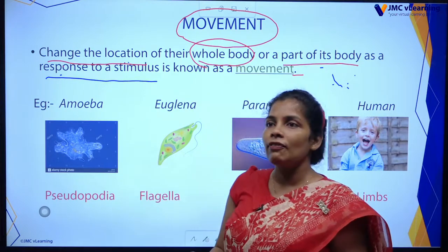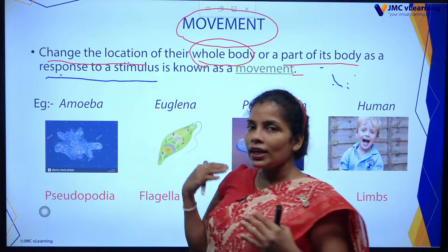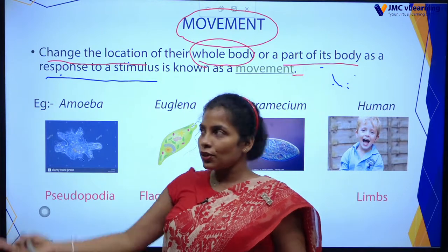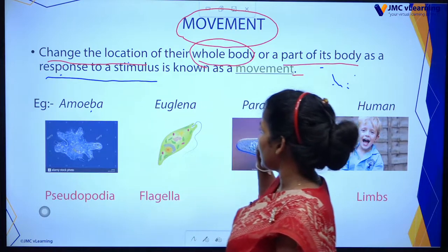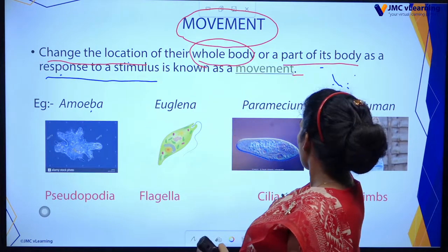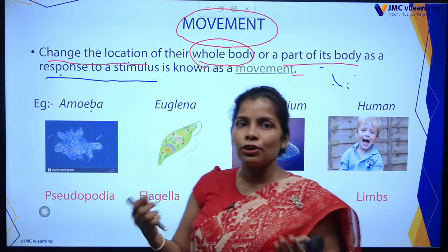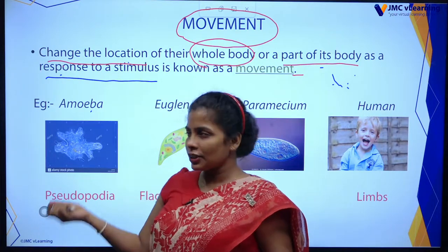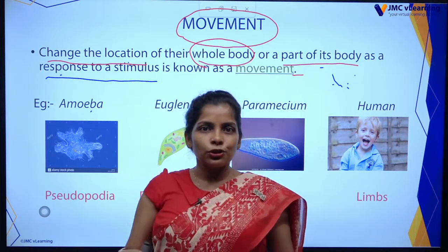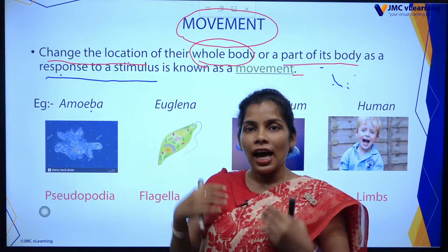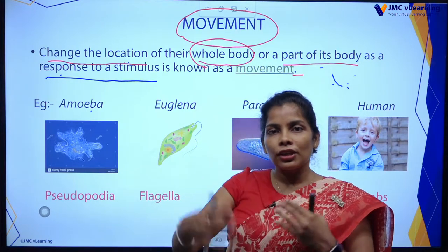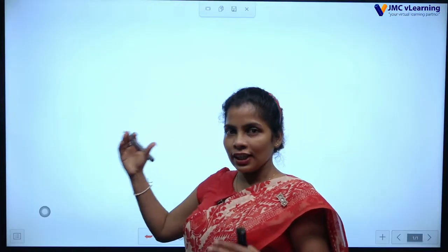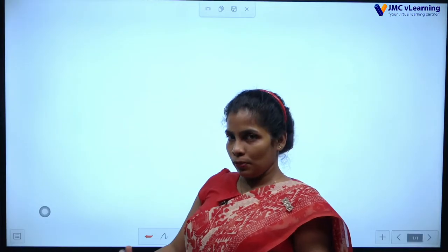Now we are going to see what animals show movement. There are some animals: Amoeba, Euglena, Paramecium, and Human. Those are examples. Today we are going to see how these animals show their movements and their appendages.